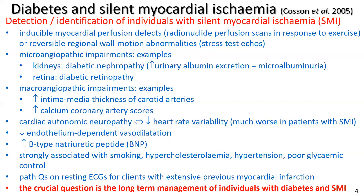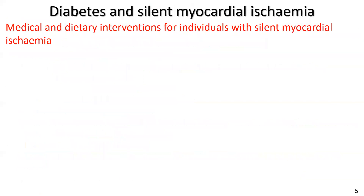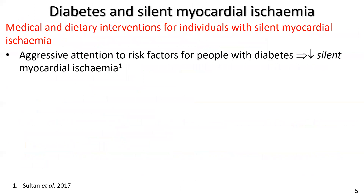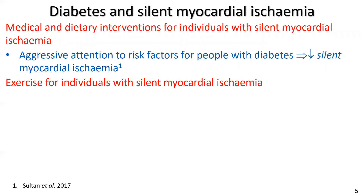The crucial question is the long-term management of individuals with diabetes and silent myocardial ischemia. Medical and dietary interventions include aggressive attention to risk factors for people with diabetes to try to reduce the amount of silent myocardial ischemia. There is evidence that aggressive risk factor intervention actually improves the silent myocardial ischemia picture for people with diabetes. Now, turning to exercise for us as exercise professionals.